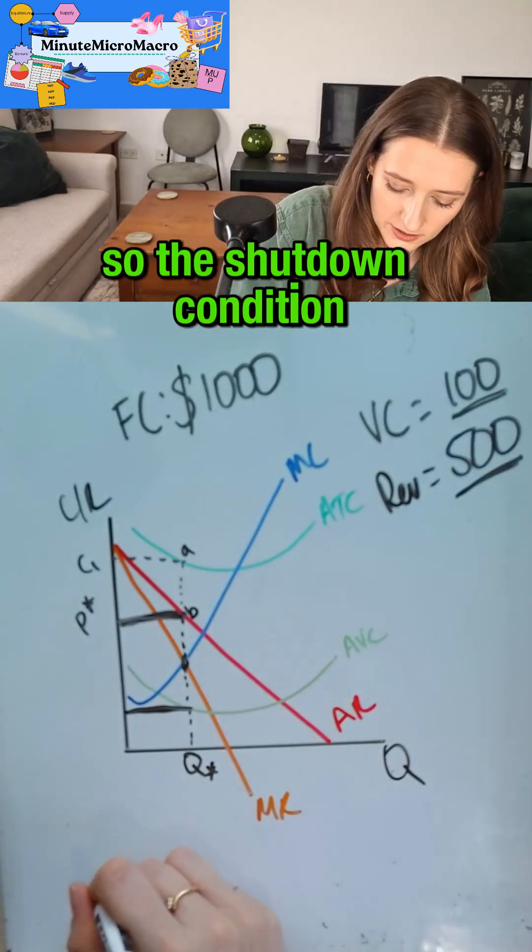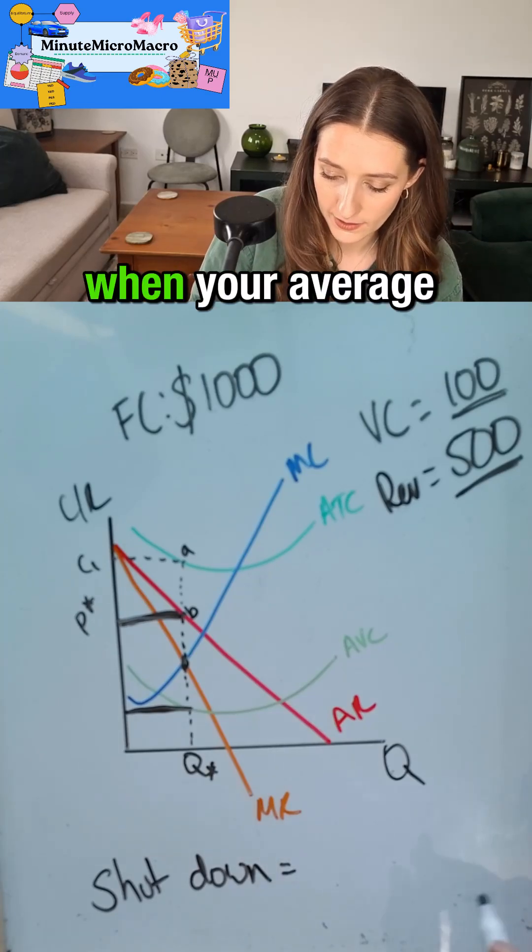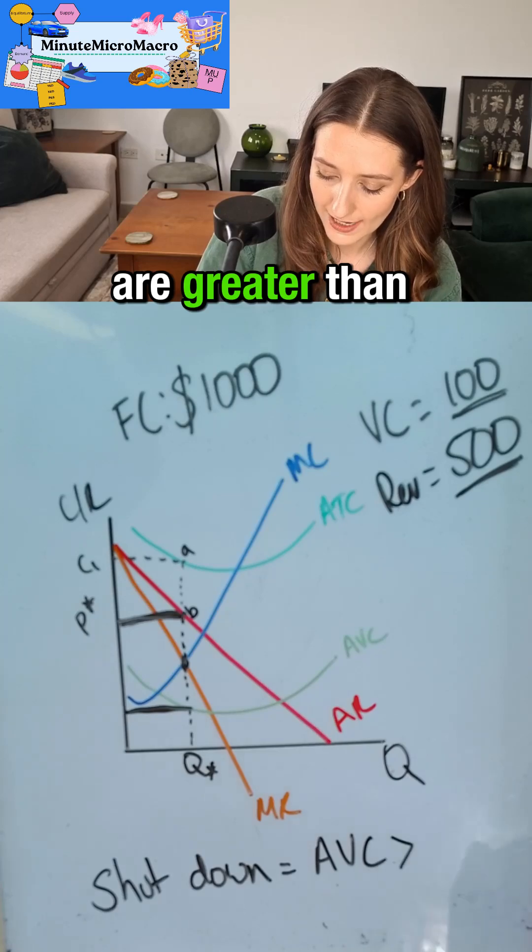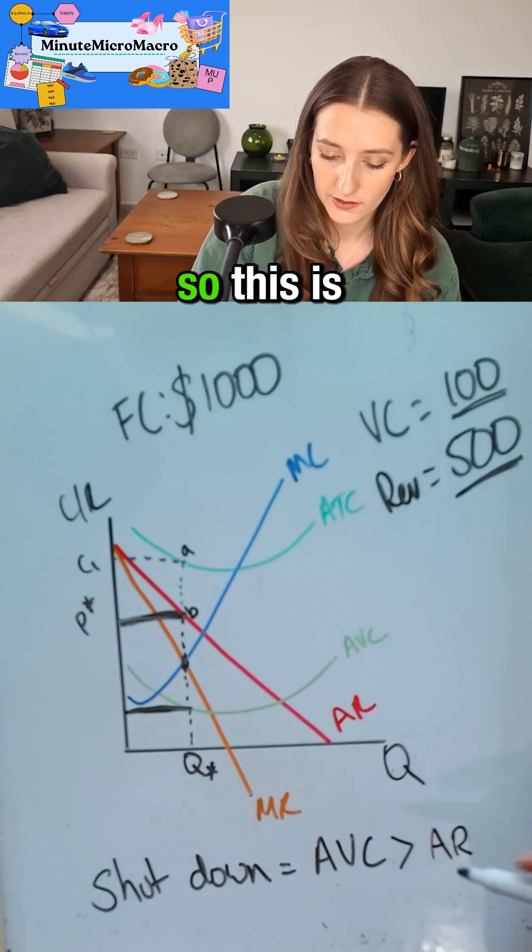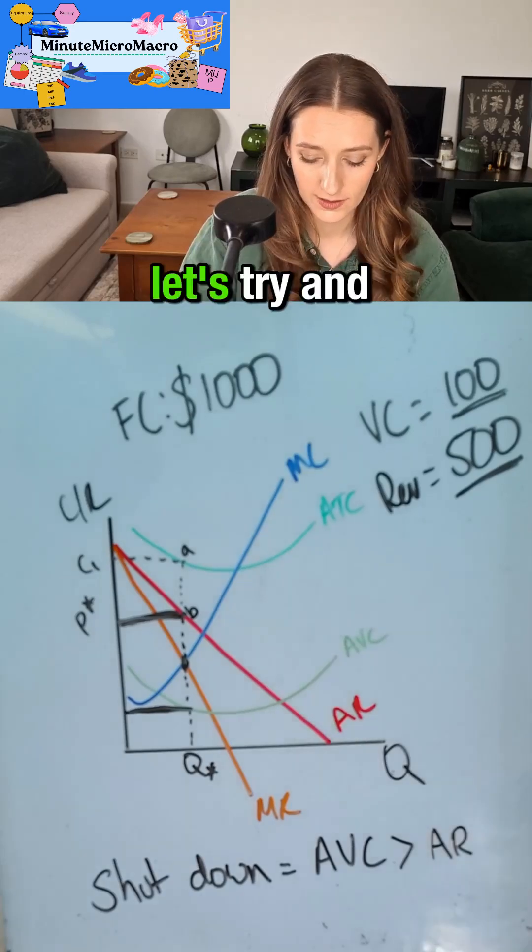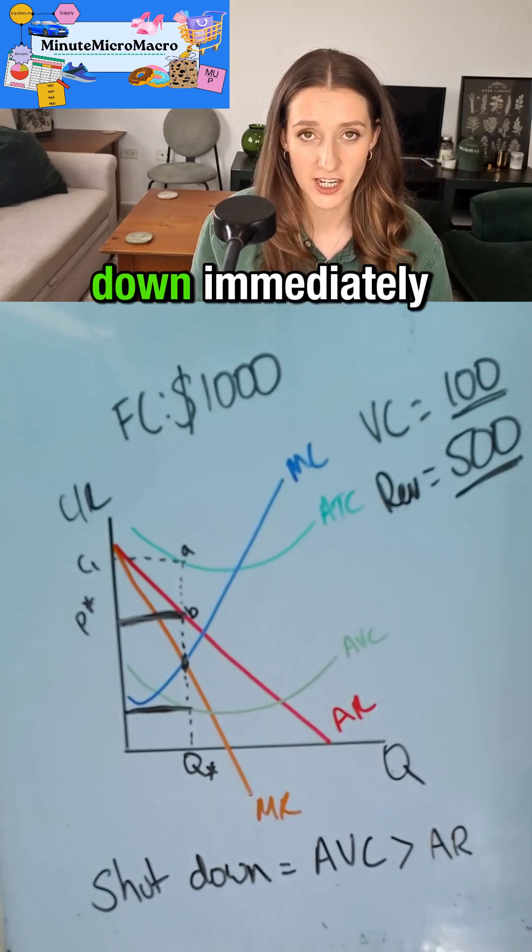So the shutdown condition when and only when your average variable costs are greater than your average revenue. So this is an example when they should stay in business even if they're making a loss. Let's try and draw an example where they should shut down immediately.